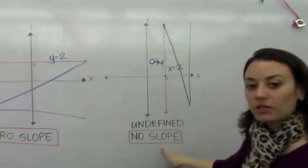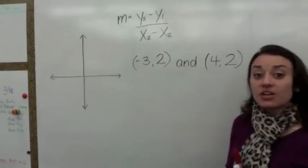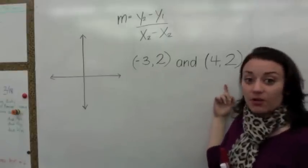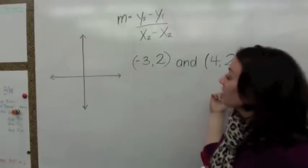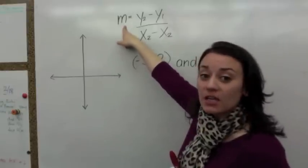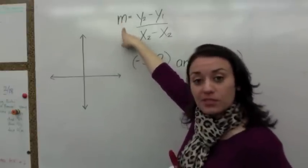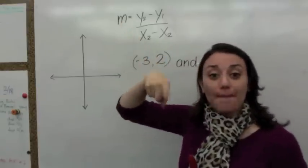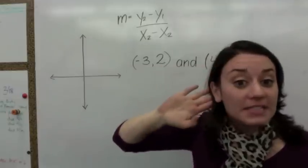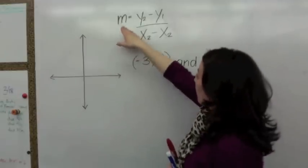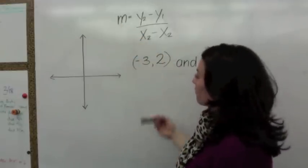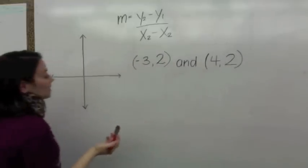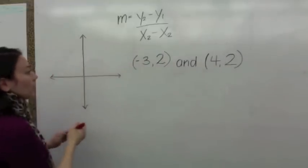Let's take a look at two points that we are given to find the slope. Slope is represented by the letter m. So first let's plot these points. The first point is negative 3, 2. So on your number line, you go negative 1, negative 2, negative 3, up 2.